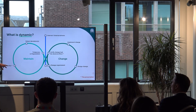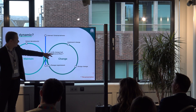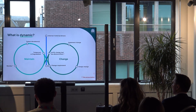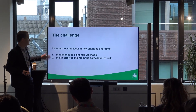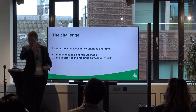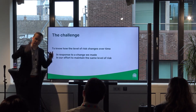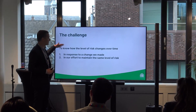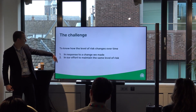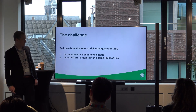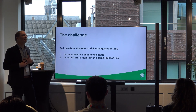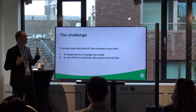I'm going to talk mainly about the monitor bit and the verify-that-the-change-had-the-desired-effect bit, which are two sides of the same coin. The challenge is: do we know how the level of risk changes over time? As we are in our organization over time, risk goes up and goes down. Do we actually know what the risk level is in response to a change we made, or in our effort to maintain the same level of risk? How do we do that? What are the options to think of?